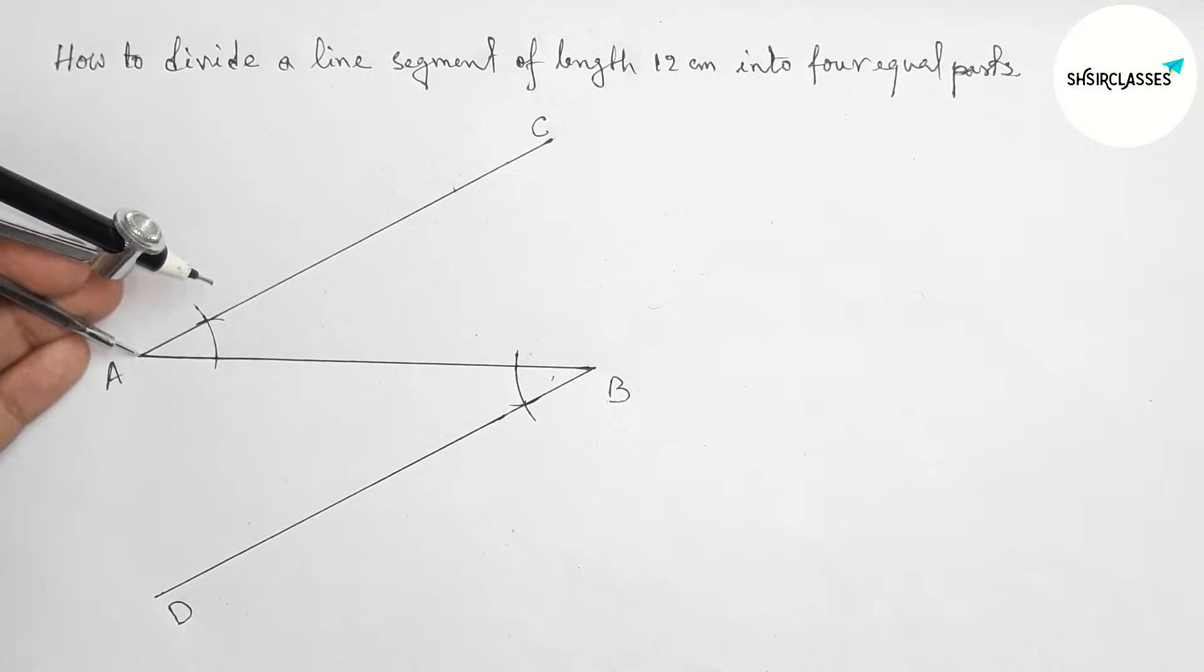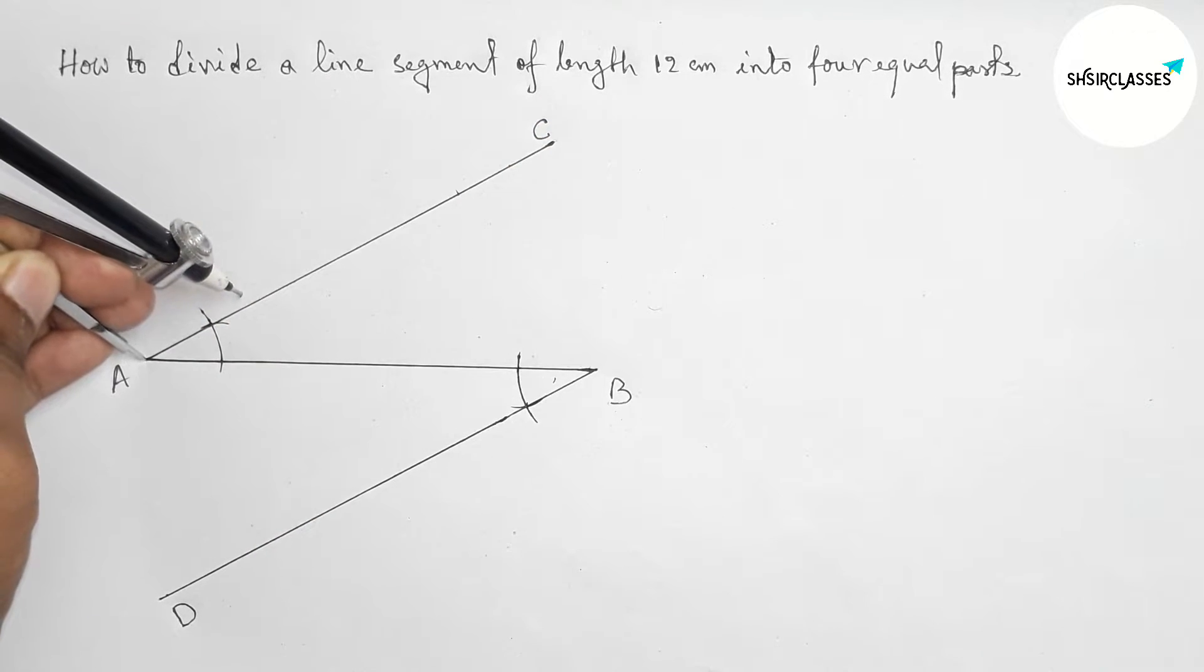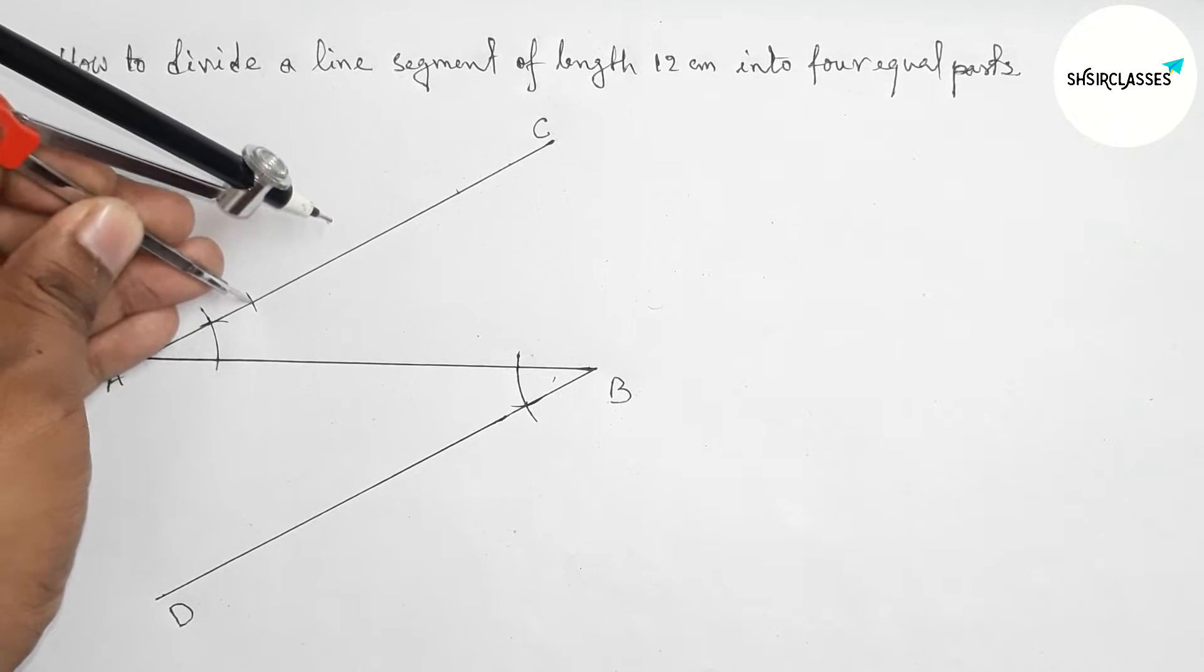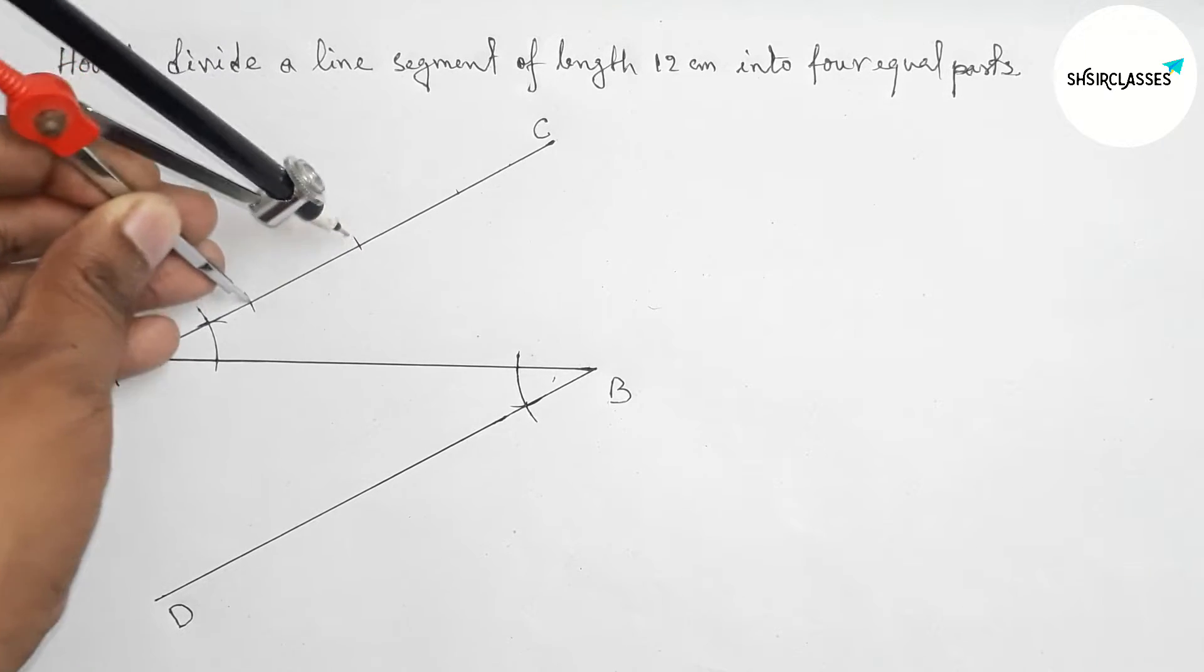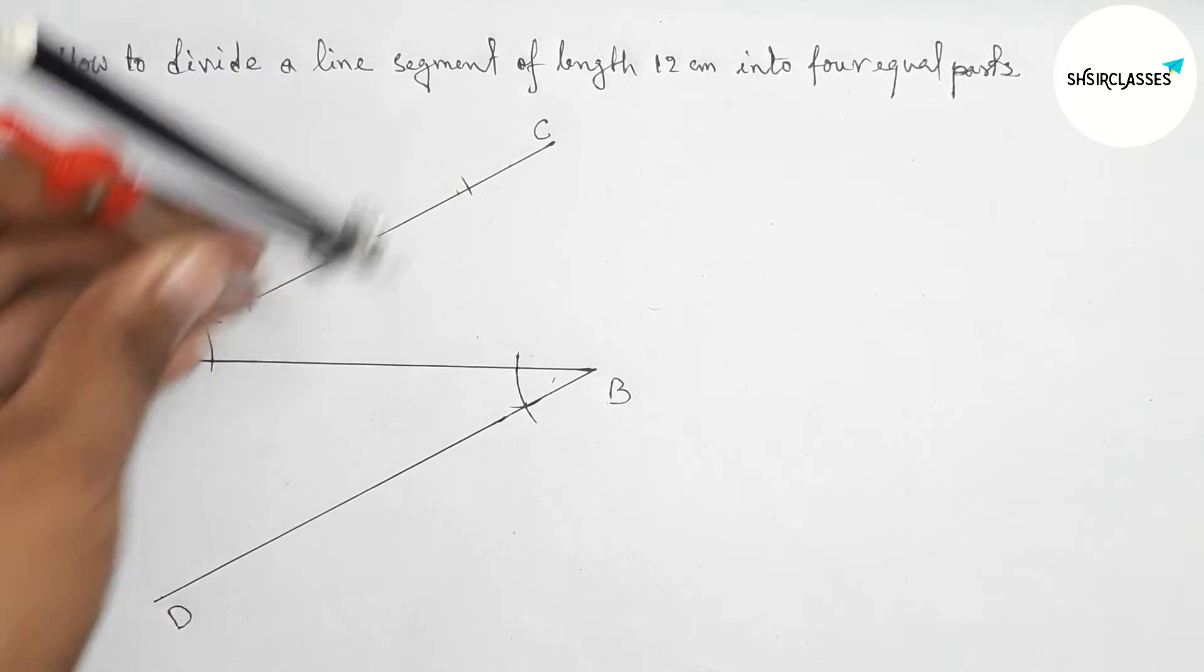Next taking any length and first cut the line AC in three equal parts. So first taking three equal part of the line AC by this way. So first cut the line AC into three equal parts.